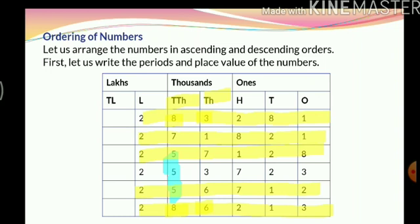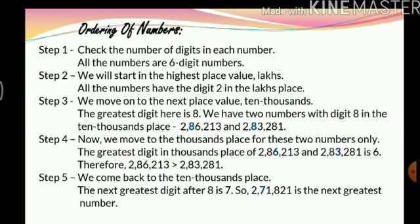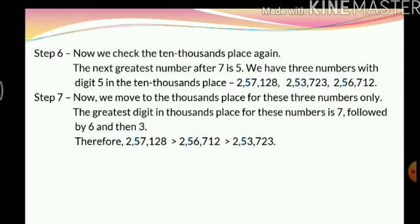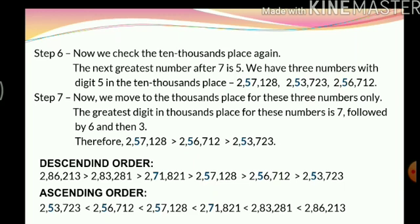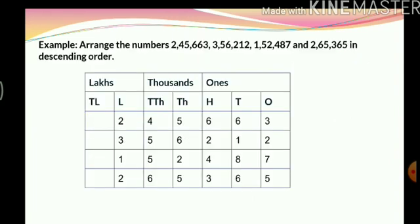I hope I was able to explain the steps properly. If not, please repeat the video and try to understand how we compared the numbers in every place value. For your convenience I have written down all the steps so you can read and understand them better. After completing all the steps we have the numbers in descending and ascending order. In descending order: 2,86,213 > 2,83,281 > 2,71,821 > 2,57,128 > 2,56,712 > 2,53,723. Similarly we also have the numbers in ascending order, using the less-than sign.